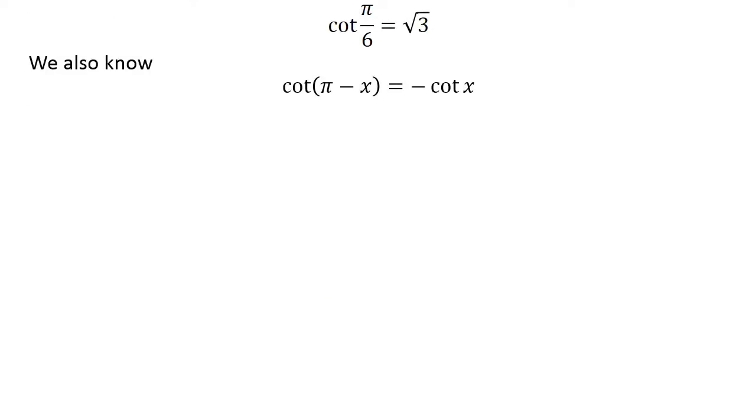We also know the trigonometry identity cotangent of pi minus x equals minus cotangent of x. The verification of this identity has been explained in the video appearing in the upper right corner, with the link also mentioned in the description section.